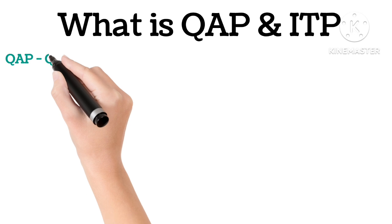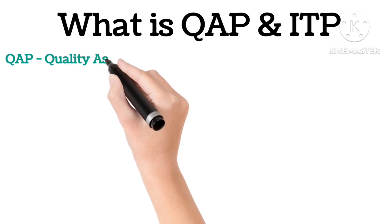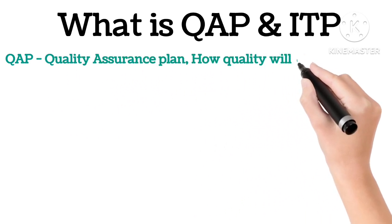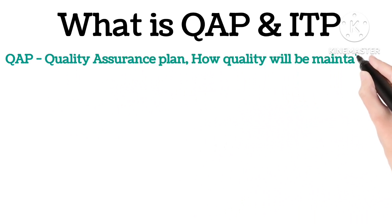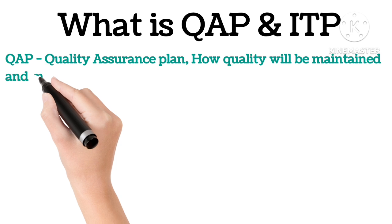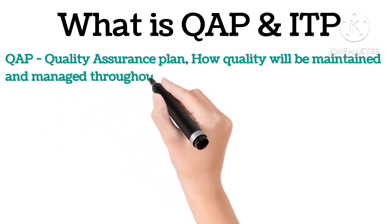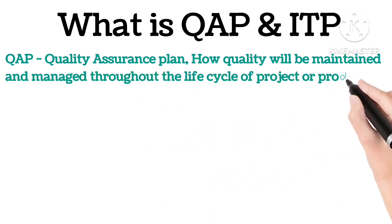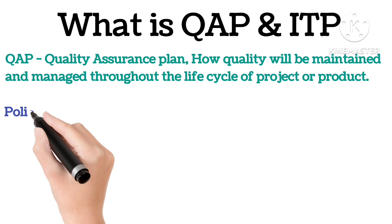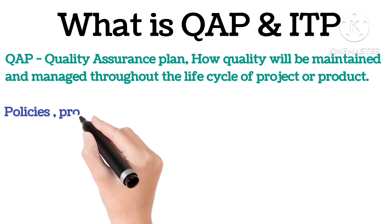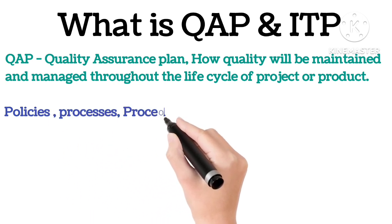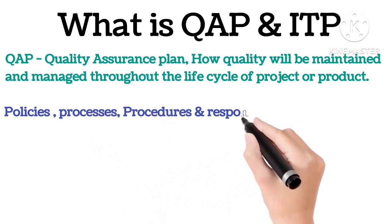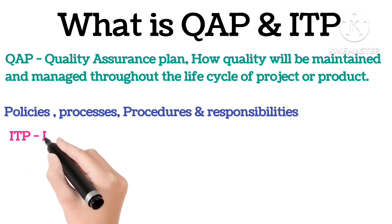What is QAP and ITP? QAP — Quality Assurance Plan. A QAP is a high-level document that outlines how quality will be maintained and managed throughout the life cycle of a product or project. It includes policies, processes, procedures and responsibilities.